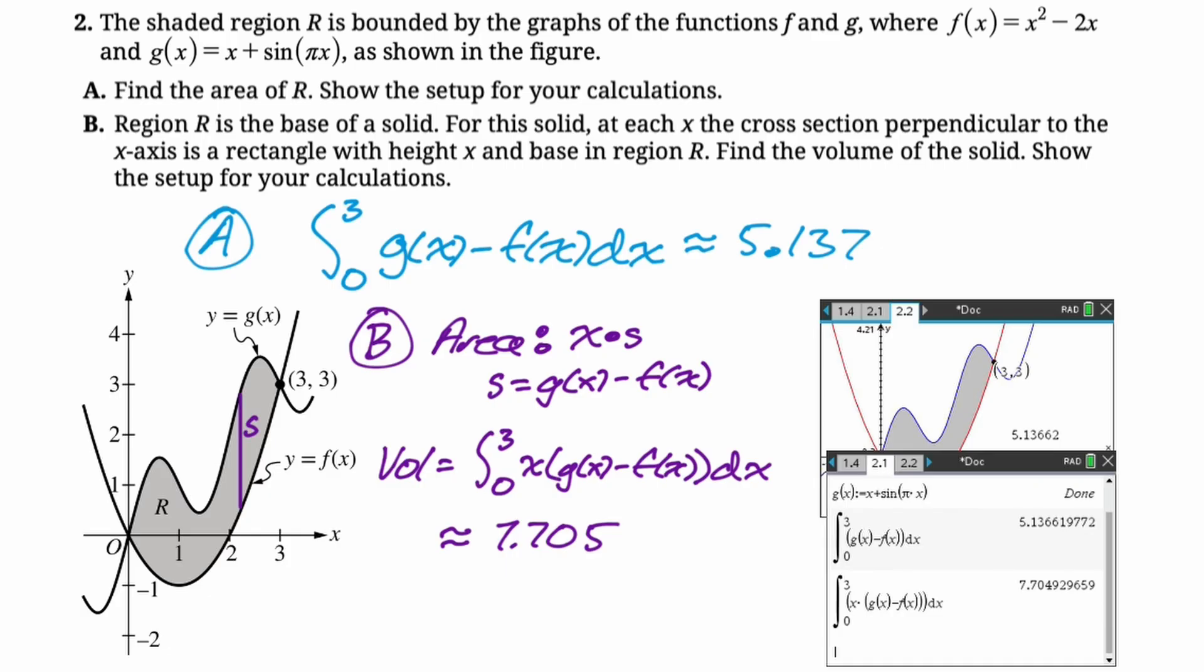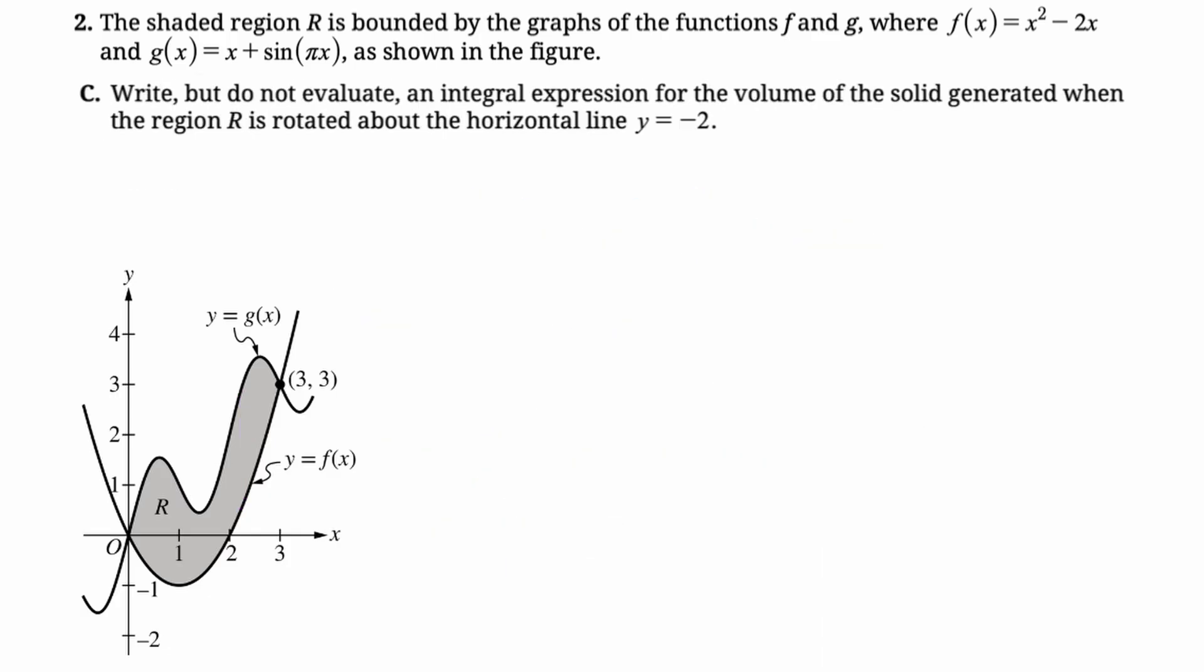Let's take a look at part C. Write, but do not evaluate an integral expression for the volume of the solid generated when R is rotated about the horizontal line y = -2. So I like to draw in the line. It kind of messes up the figure on the actual test, but also you don't have the figure in front of you anymore because now this is on the computer. So I've drawn in y = -2. And now what I'm going to do is draw in a big radius and a little radius because I always want to do π times the integral of big r² minus little r². That's my goal.